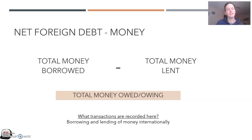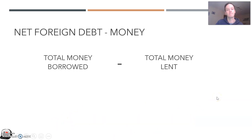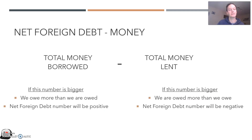What transactions are recorded here? This is just the borrowing and lending of money internationally. In your study design it'll say the composition — which is what's in it — and that's the borrowing and lending of money internationally.